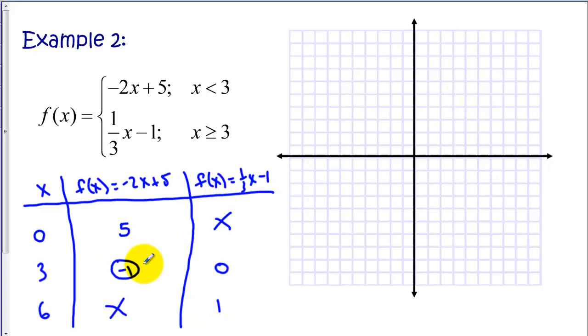So if we graph our segment on the left half here, we've got a point at 0, 5. And we have an open circle at 3, -1. And this graph is heading off that direction.